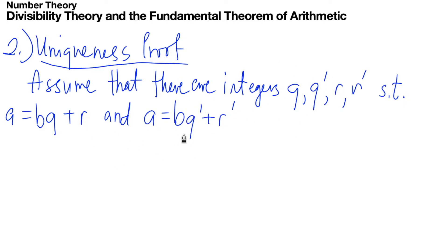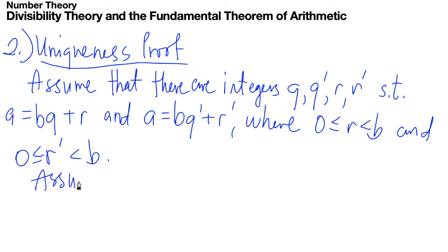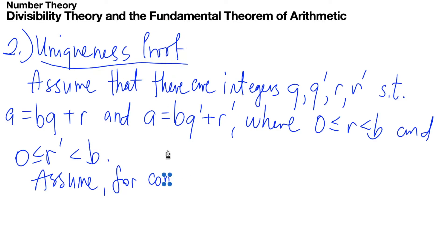So we're saying that Q and R are not unique — that A can be written two ways. What we're going to do is show that they are actually unique, where R is between 0 and B (R can equal 0), and R prime is between 0 and B (R prime can also equal 0). We assume for convenience that Q is greater than or equal to Q prime.